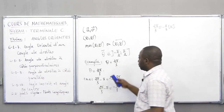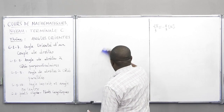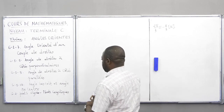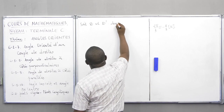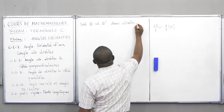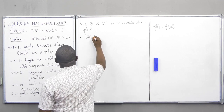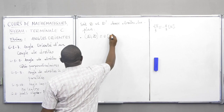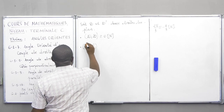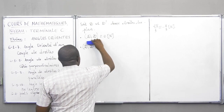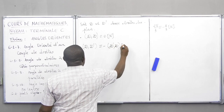Voici quelques propriétés pour l'angle de couple de droite. Première propriété : soit D et D' deux droites du plan. L'angle formé par D et D est congru à 0 modulo π. Deuxième propriété : l'angle (D, D') est congru à moins l'angle (D', D) modulo π. Cela stipule que lorsque nous permutons les deux droites, il y a apparition du signe moins.